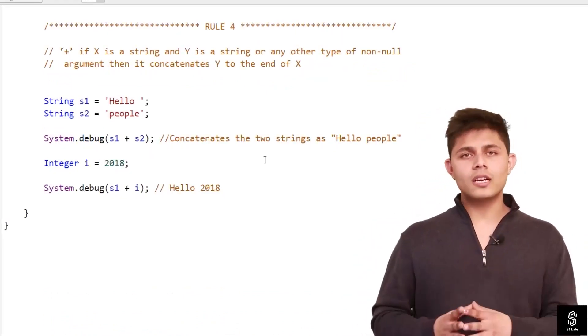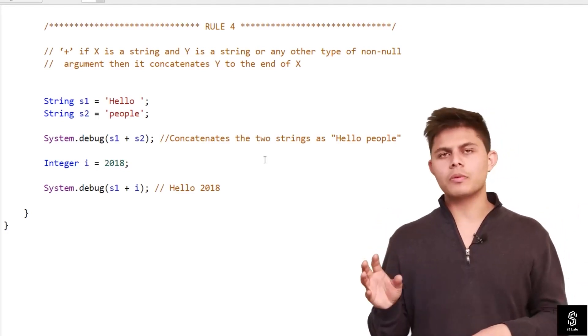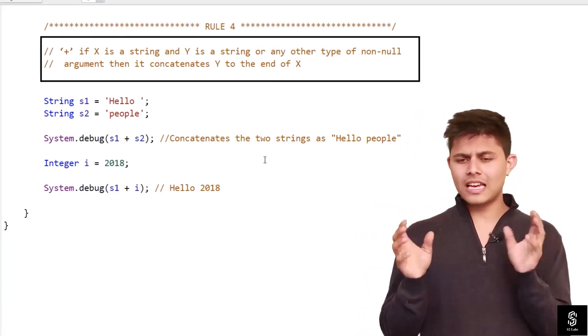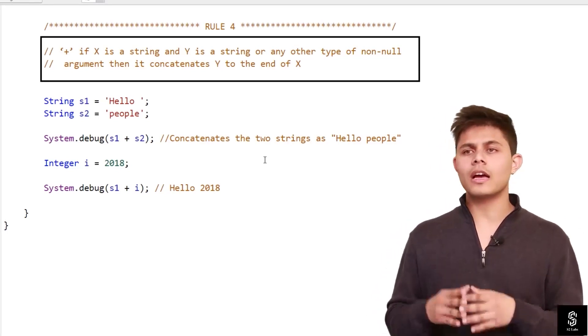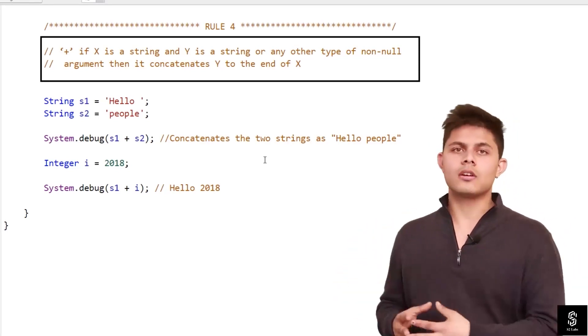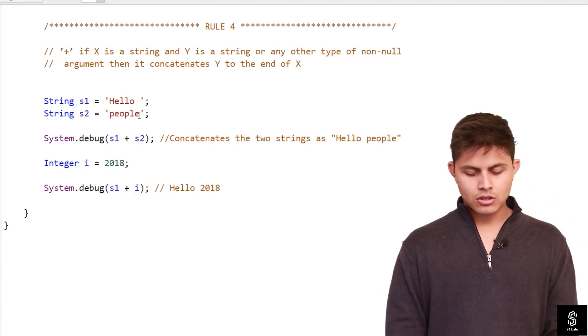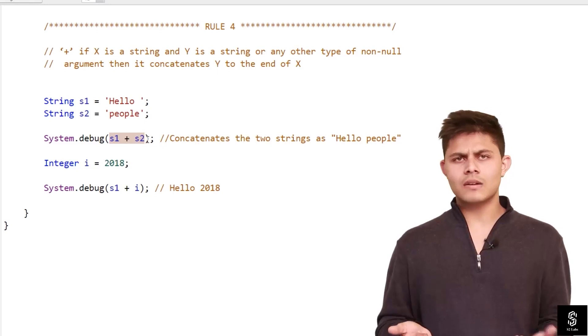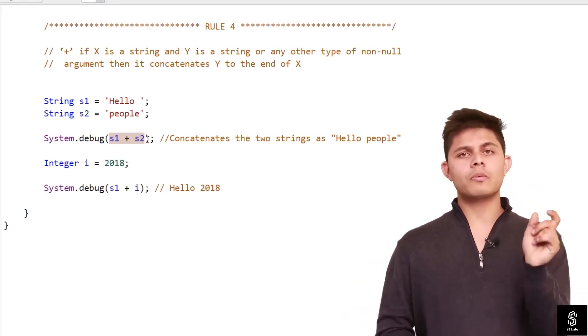The next and very important rule about plus operator, not for the subtract operator, only for the add operator, is that if x or y, any one of them is a string, then the plus operator will work as a concatenation operator instead of as an addition operator. Here's an example. S1 equals hello and S2 equals people. If I write s1 plus s2, then it will concatenate both of the strings: Hello people. This is the final string we'll get as output when we use plus operator with strings.